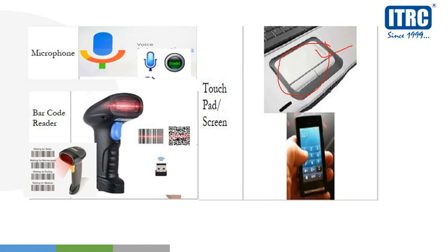Same in mobile phones — hum mobile phone pe kuch number type kar rahe hai, hum touchpad ko touch karte hai, like one, two, three — that is touchpad as input device. Waisi humara barcode reader hai which is used to scan the barcode. Jo bhi hum product lete hai, uha pe barcode laga hota hai — aap apni copy utha ke dekhi, uha pe bhi barcode laga hoga. Hum use barcode reader se scan karte hai, aur us barcode se humari information jaati hai computer system mein. That is also an input device.